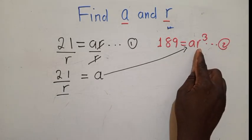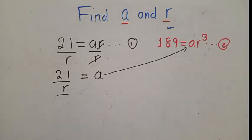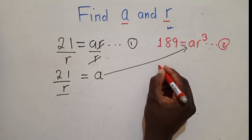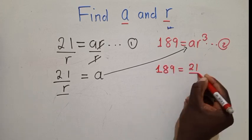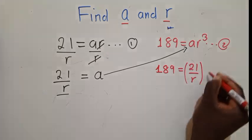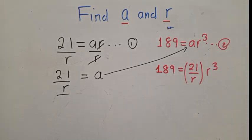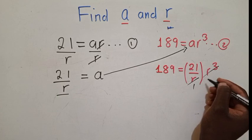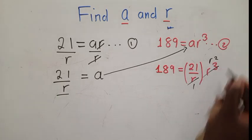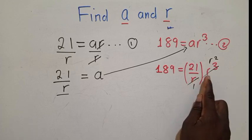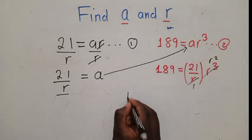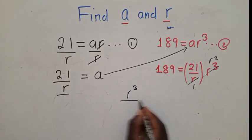Because we want to have r's on one side of the equation. So this would be 189 equals 21 over r times r to the power 3. Now from this stage, we can divide. We know that r into r is 1, into r to the power 3 is r to the power 2.